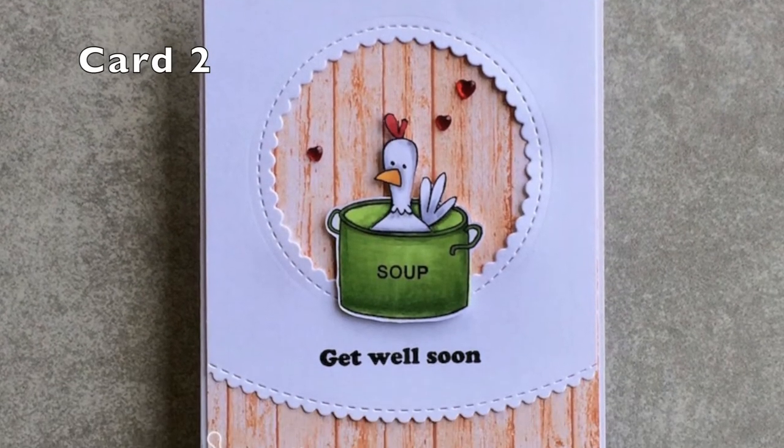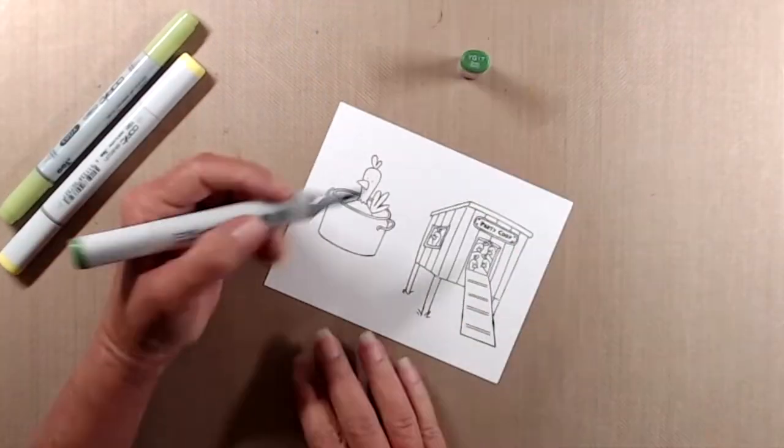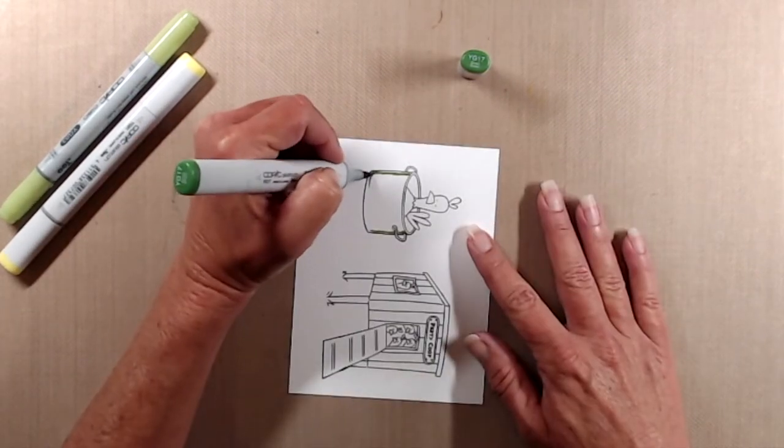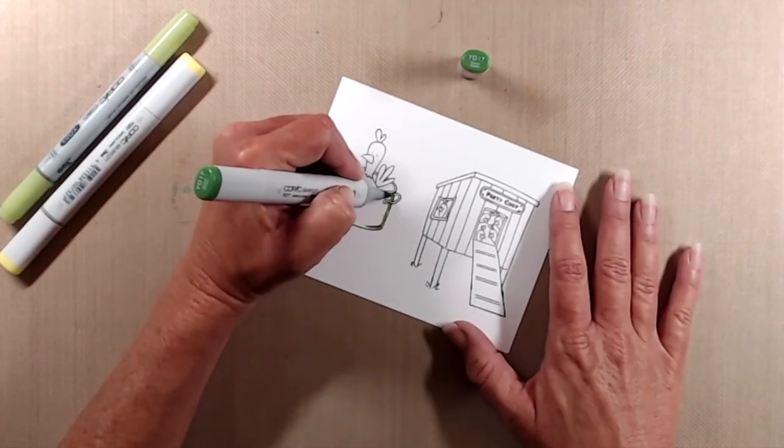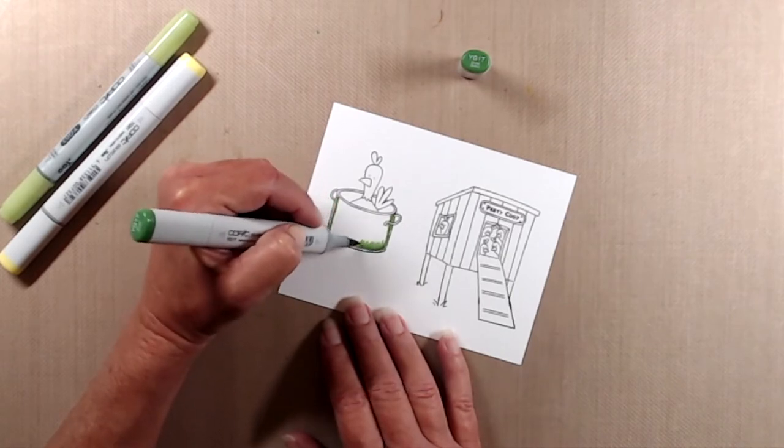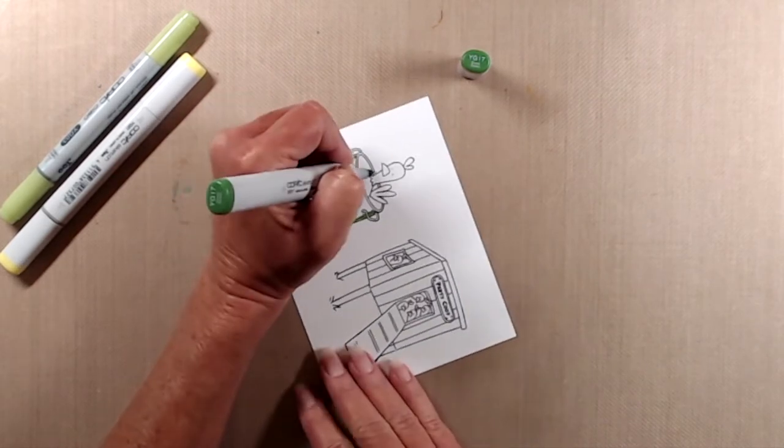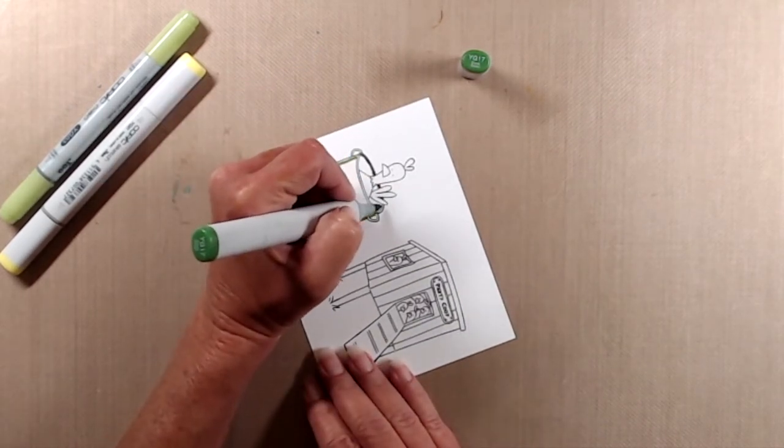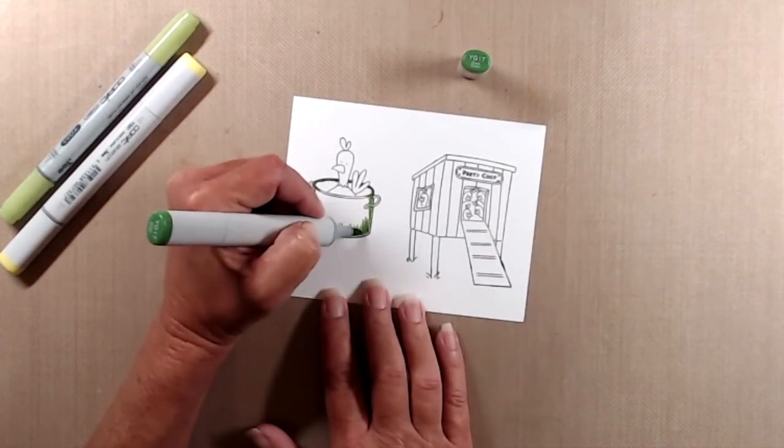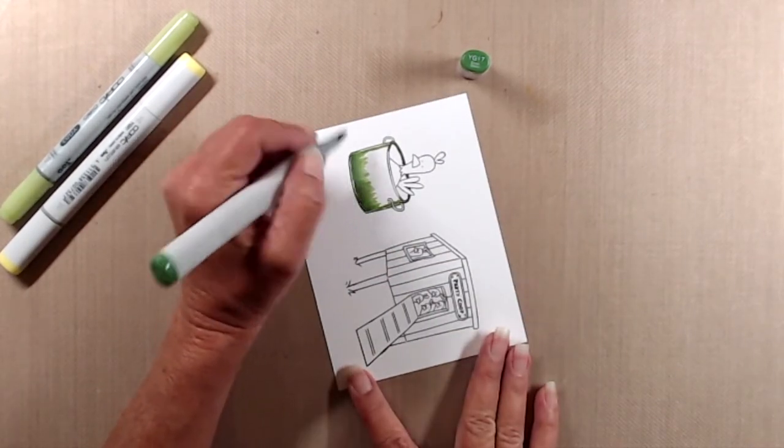For my second card I kept this one pretty clean and simple. When I was thinking about how to color in the stock pot I didn't really want to do it in grays to make it stainless steel. So I consulted with the google and found some really cool stock pots in different colors. Since I was using some of the background paper I wanted the contrast to be very prominent so I chose to color my stock pot lime green because I saw a picture of a lime green enamel coated stock pot.